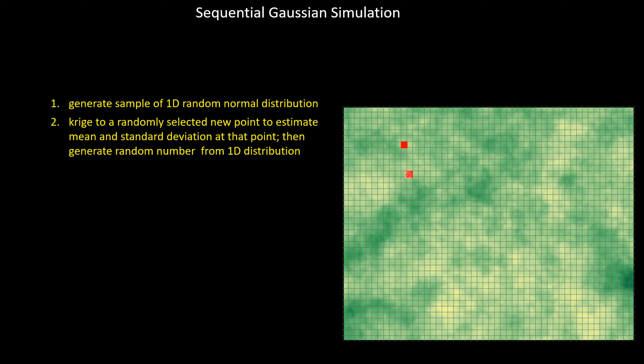Having done that, we repeat the process. We Krig to a third point, get a mean and standard deviation, generate a random number, and place it there. Then we Krig to a fourth point, fifth point, and so on — each time getting a new mean and standard deviation conditioned on all previous values, generating a new random number for that point, until we fill up the entire model domain.